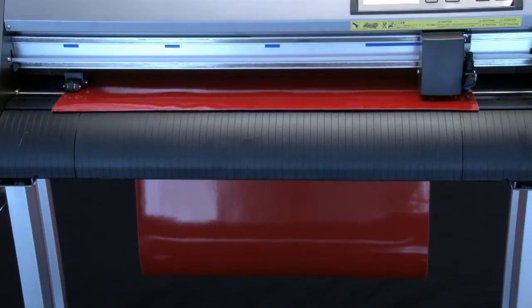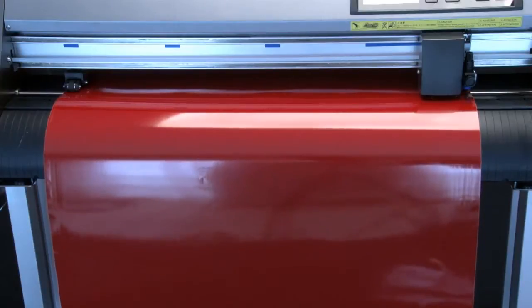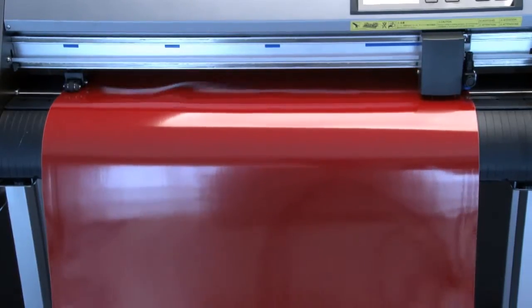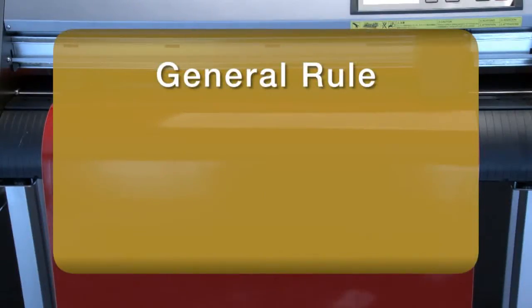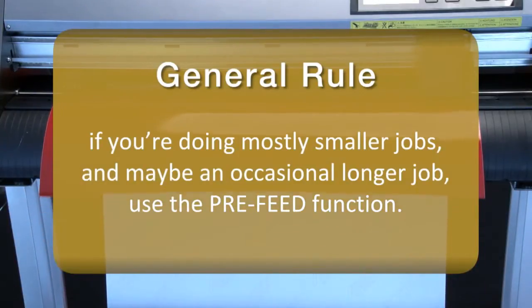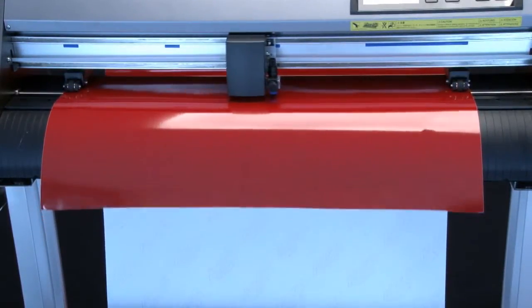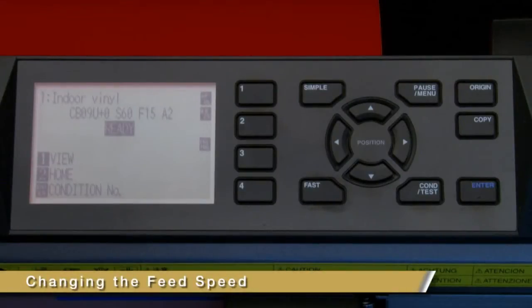Now each time a job is sent to the cutter, it will automatically pre-feed the material to the specified length prior to cutting that section. Turning on the auto pre-feed is a good idea when you're consistently cutting longer jobs. At the same time, it can be a time waster if you're cutting smaller jobs that don't need the material to be pre-fed. As a general rule, if you find that you're doing mostly smaller jobs and maybe an occasional longer job, use the pre-feed function. On the other hand, if you're consistently doing longer jobs or have a material that seems to slip a lot, enable the auto pre-feed function.